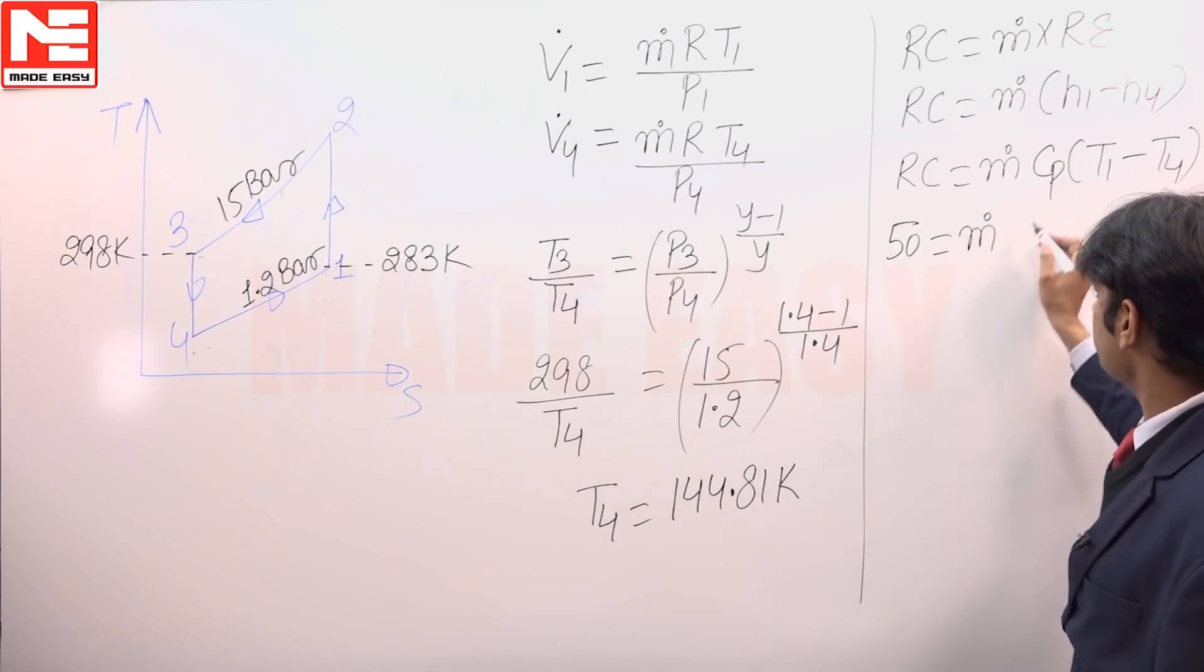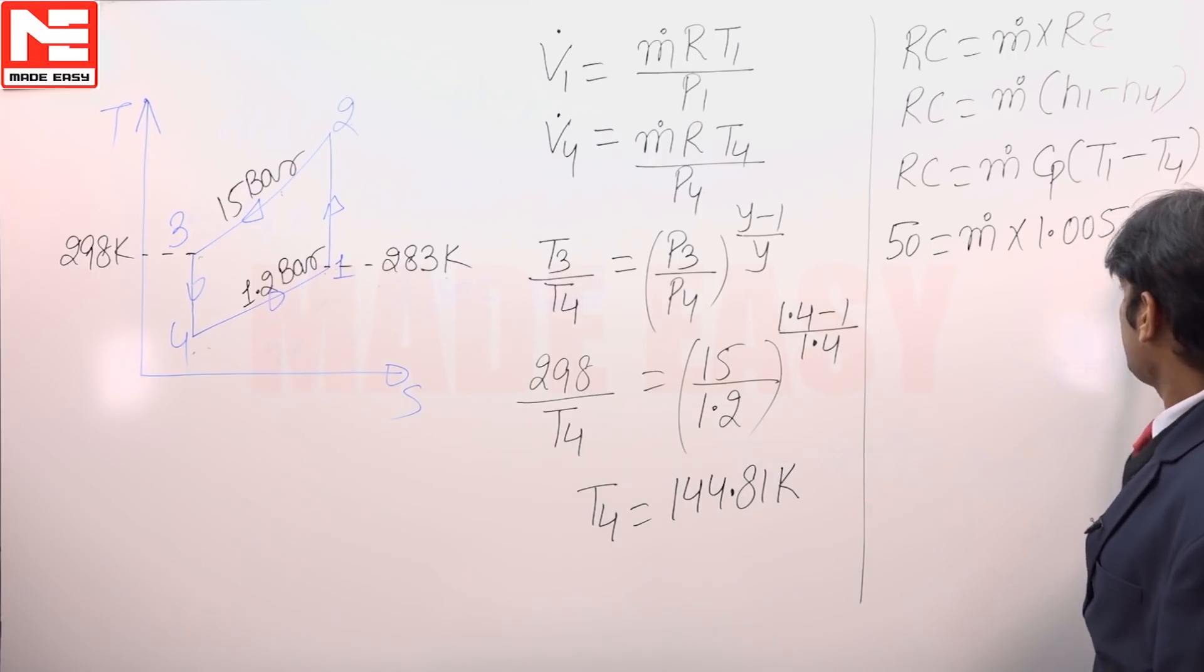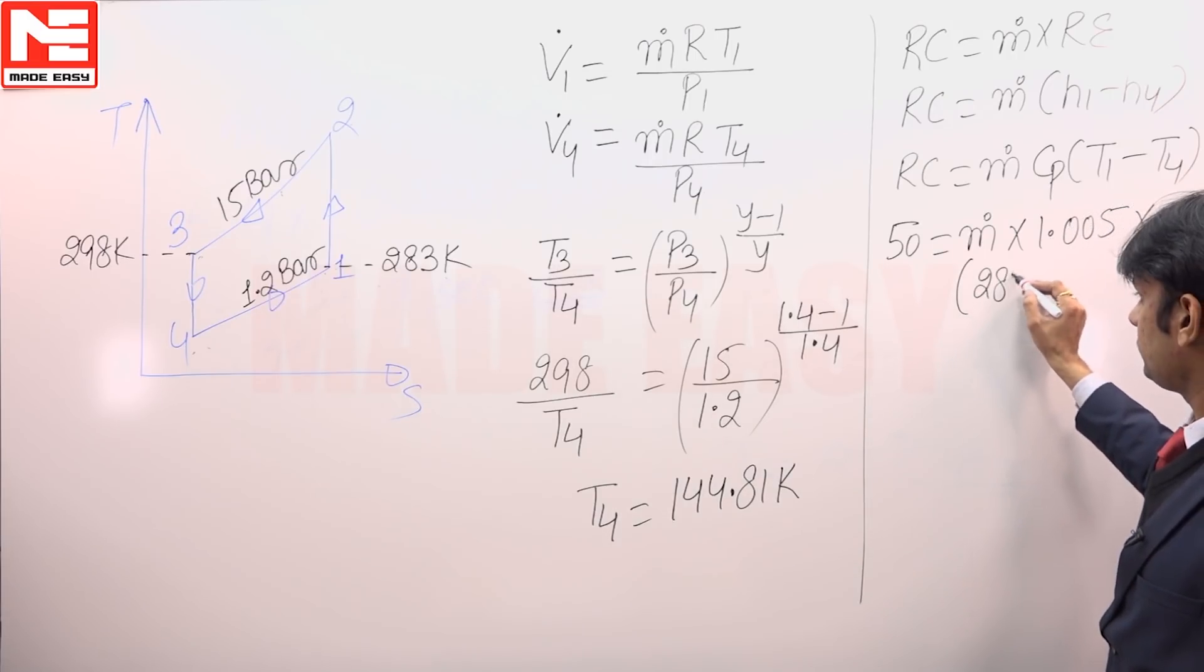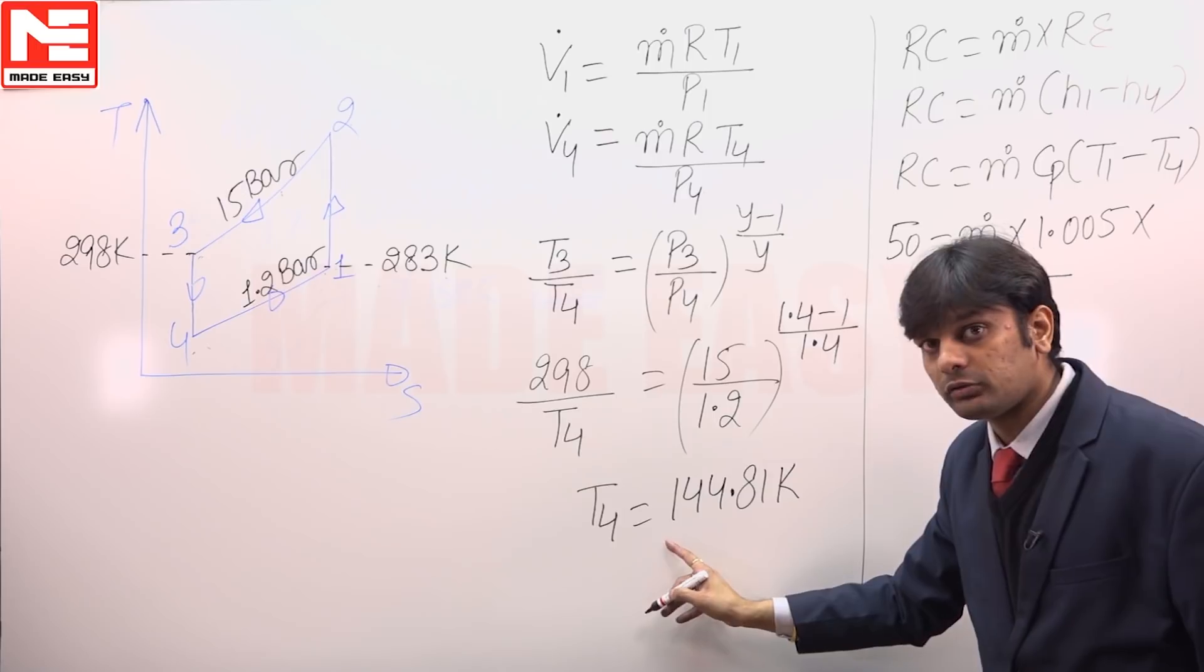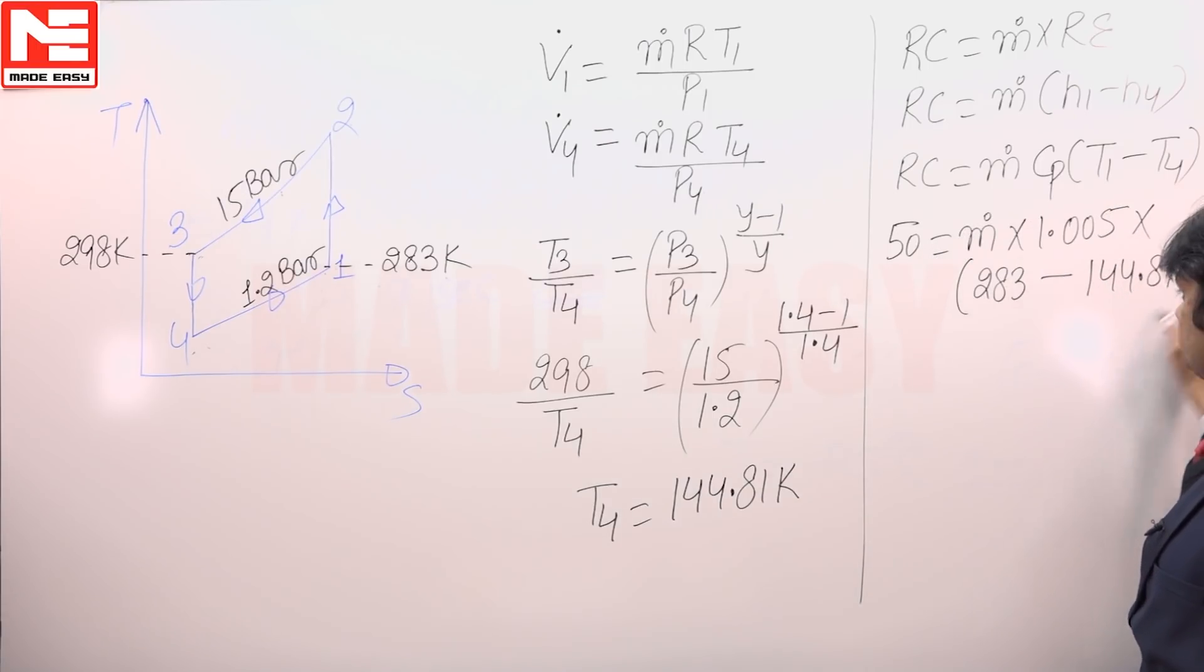The value of CP of air is 1.005 kilojoule per kg Kelvin, and the value of T1 is given and T4 is already calculated as 144.81.